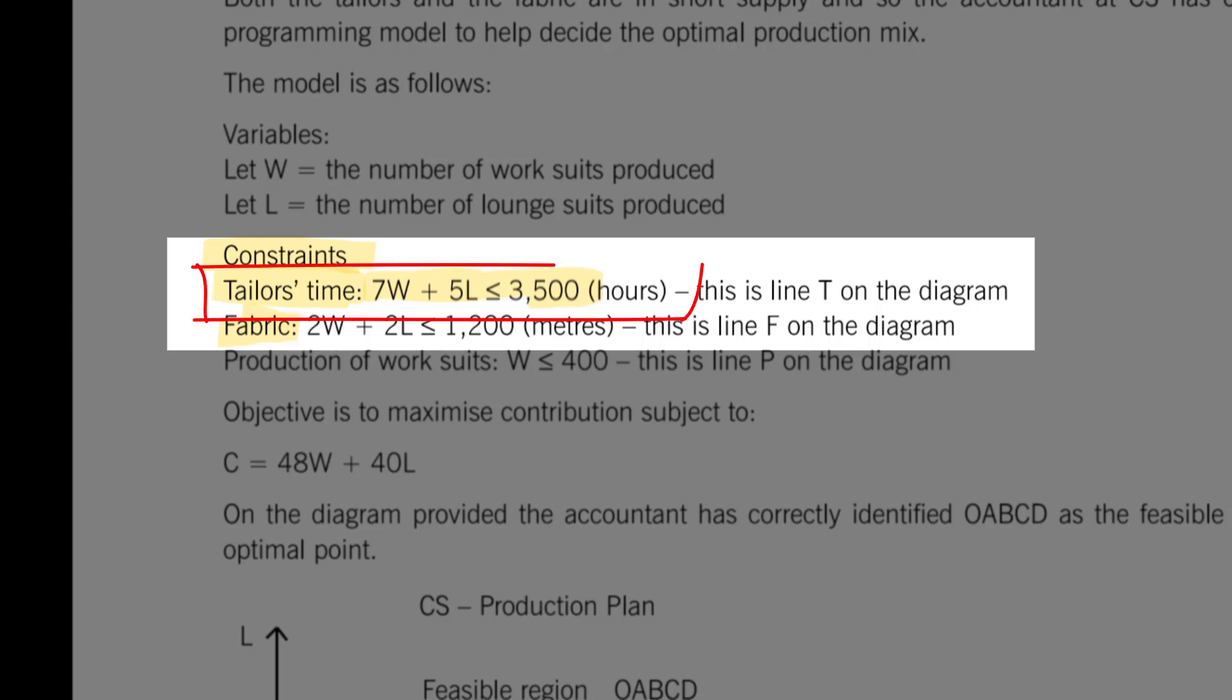We've got a W and an L, which refer to two product types in this question. So the upper equation, we see 7W plus 5L less than or equal to 3,500. The lower equation, we've got 2W plus 2L less than or equal to 1,200.